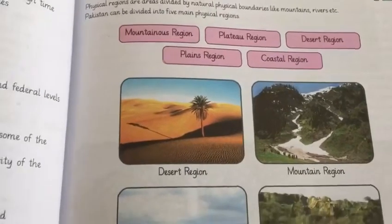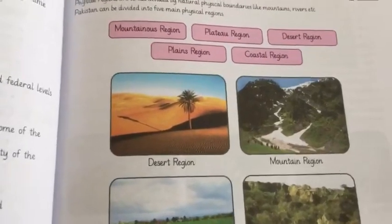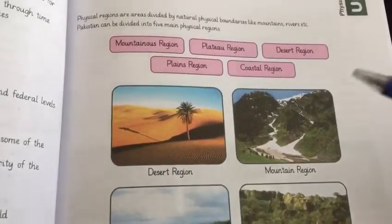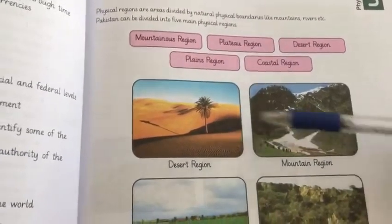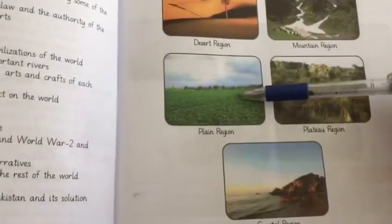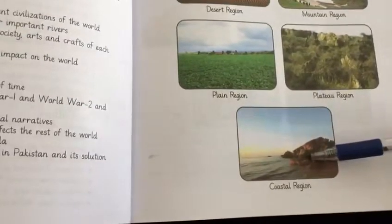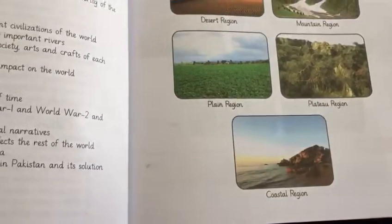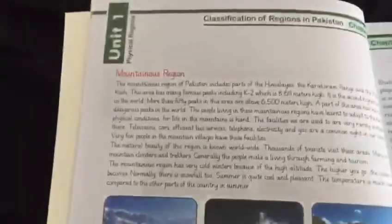You can see pictures of all the different regions: the desert region, the mountain region, the plain region, the plateau region, and the coastal region. Now we will move to the next page, page number two, and read about the mountainous region.